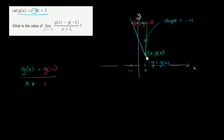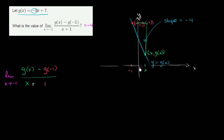We already know that no matter what x you pick, the slope between x, g of x, and this point right over here is going to be constant. It's going to be the slope of the line — it's going to be equal to negative 4. Taking the limit of this just gets you to negative 4; it's really just the slope of the line. So even if you take the limit as x approaches negative 1, as x gets closer and closer to negative 1, these points get closer and closer, but every time you calculate the slope it's just going to be the slope of the line, which is negative 4.